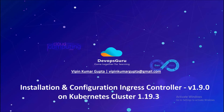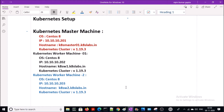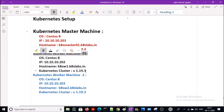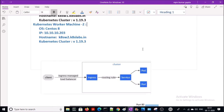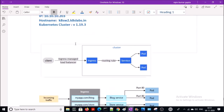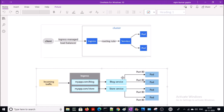Hey, good morning everyone. My name is Vepen Kumar and in this video we are going to set up ingress controller 1.9.0 on Kubernetes cluster 1.19. This is my Kubernetes cluster environment — I have one master machine and two worker machines, worker 1 and worker 2. Before installing the ingress controller, let's understand how it works with the help of two architecture diagrams.